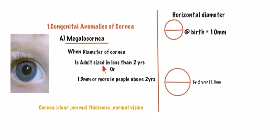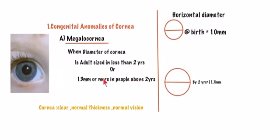Megalocornea is a condition where the cornea is already adult-sized in children less than two years old. Normally the horizontal diameter should be 10 millimeters at birth, but in megalocornea it is already 11.7 millimeters or more. In individuals around two years of age, megalocornea is defined as a horizontal diameter of 13 millimeters or more.